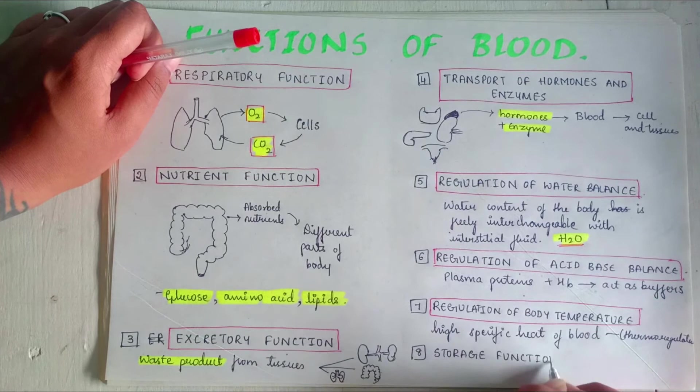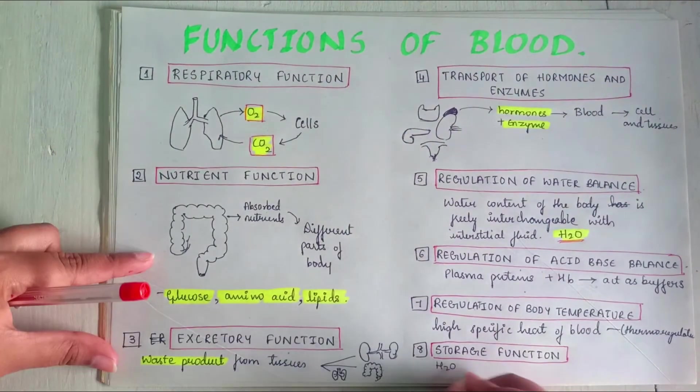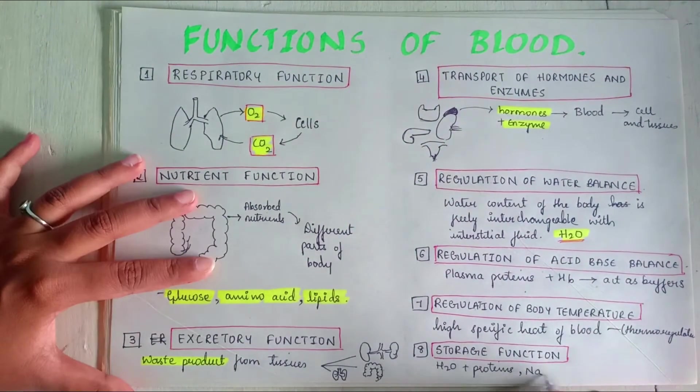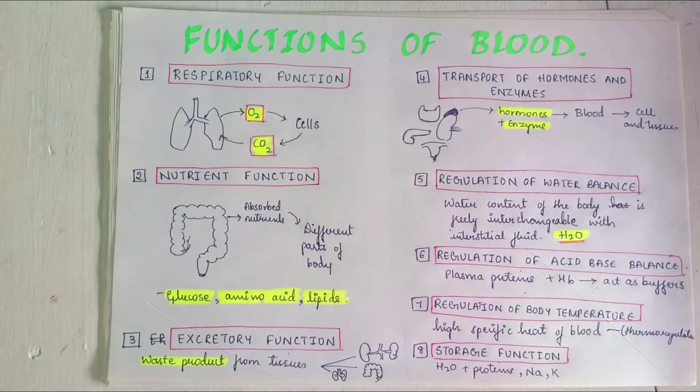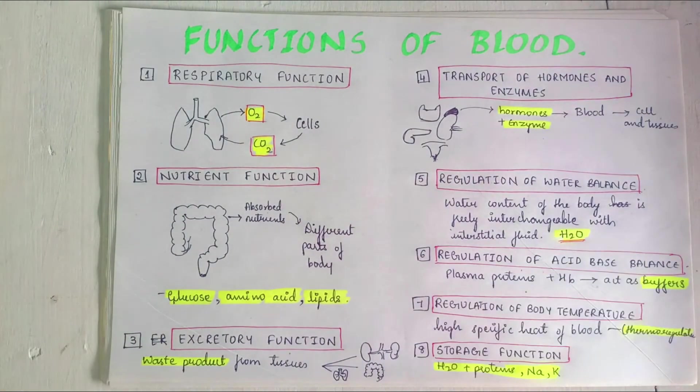Eighth, storage function. Water and some important substances like glucose, sodium, potassium are constantly required by tissues and hence present in blood.